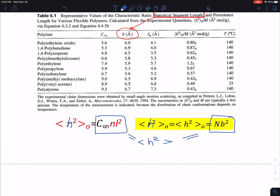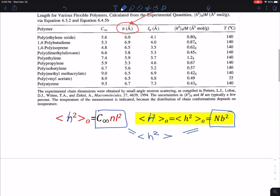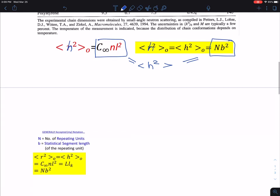So this is an end-to-end distance, h square. And that's a different textbook using these different notations. And this also can be the same as using the statistical segment lengths. It can be used just like that. So therefore, once again, if I write it, I think that now you have seen this one now, characteristic ratio, n times L square.